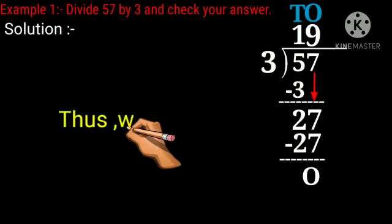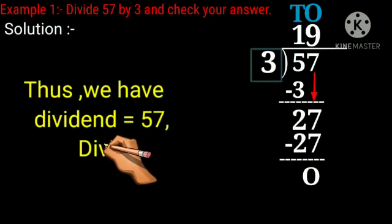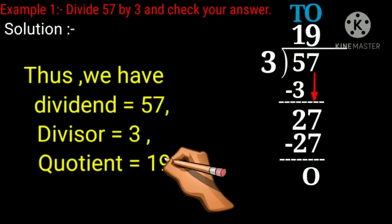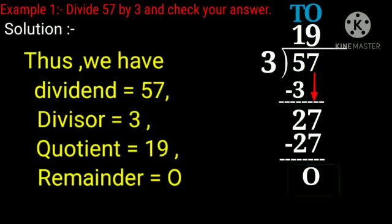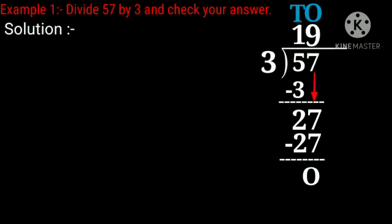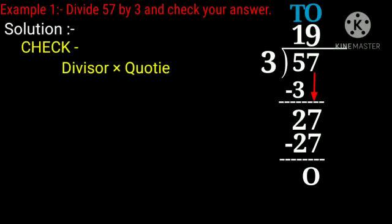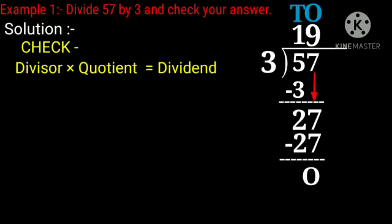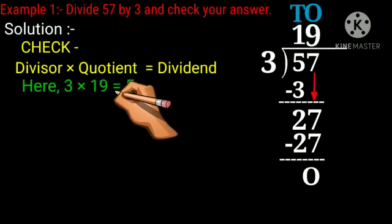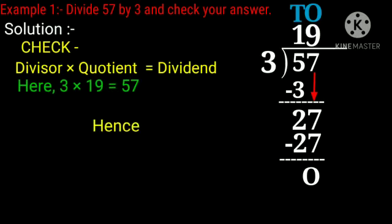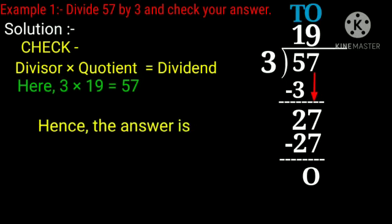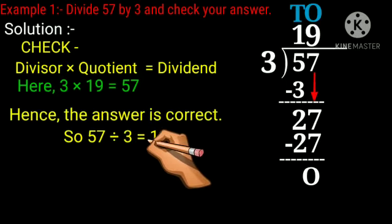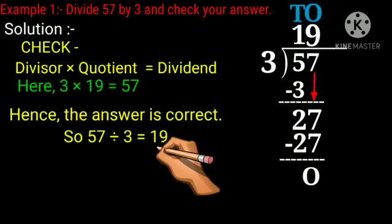Thus, dividend equals 57, divisor equals 3, quotient equals 19, and remainder equals 0. Now check your answer. Divisor into quotient equals dividend. Here, 3 multiplied by 19 equals 57. Hence, the answer is correct. So, 57 divided by 3 equals 19.